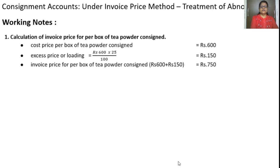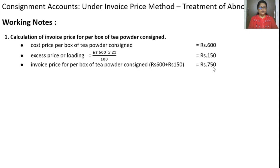First, let us understand what calculations are required. Calculation of invoice price: the cost price is Rs. 600 for each box. The loading is 25% of cost, which is Rs. 150. So the invoice price is cost price plus loading — that is Rs. 750 per box.